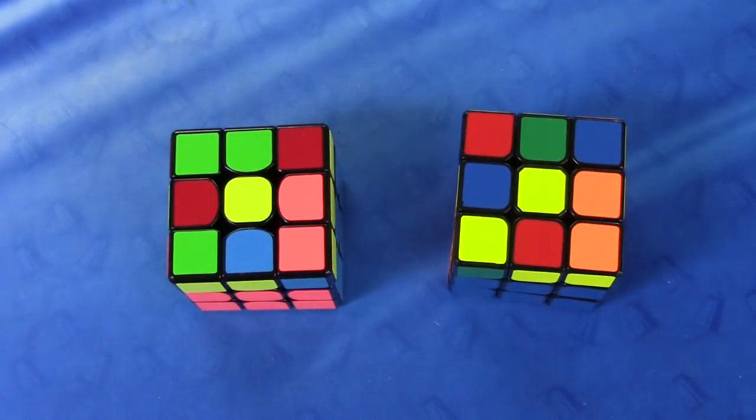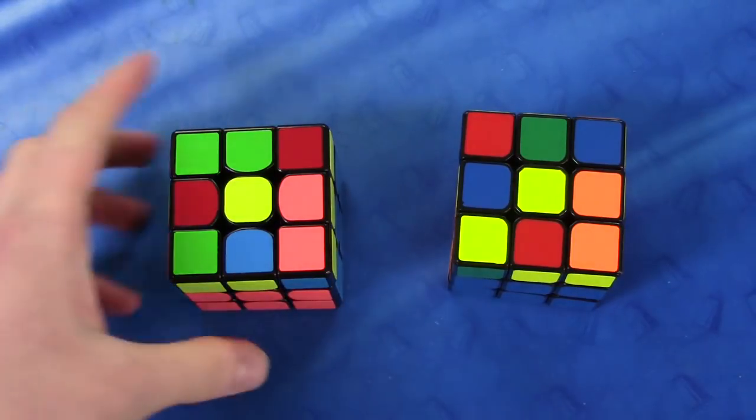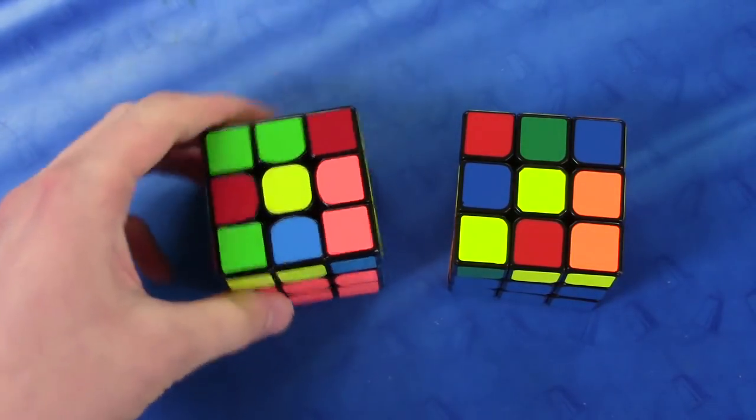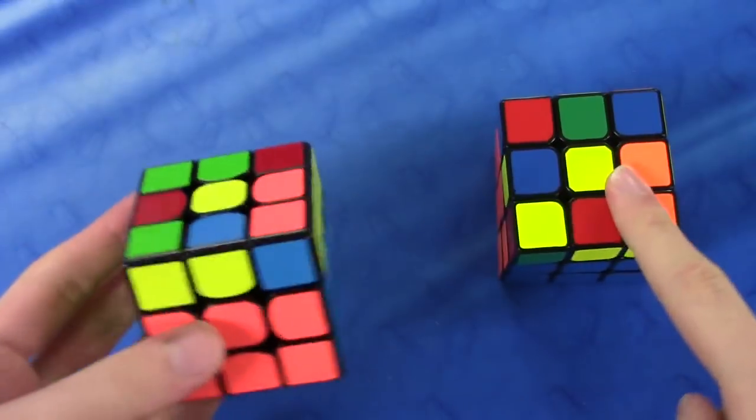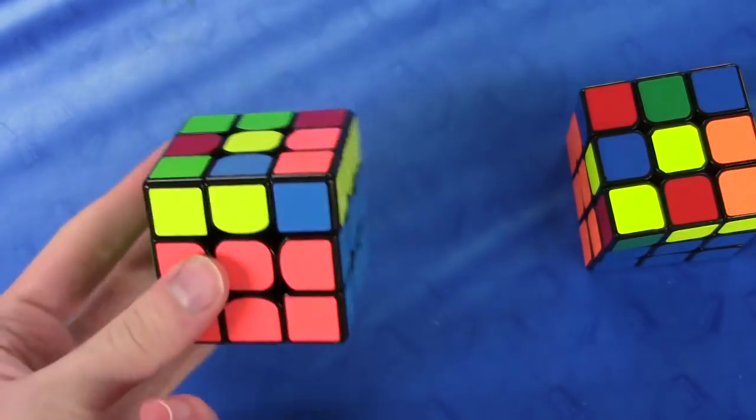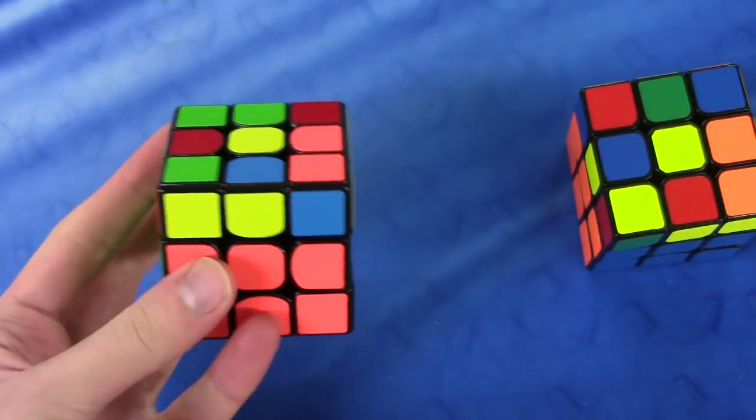So the final case, the dot OLL case, is a little less good than the other ones. Now I have two algs once again, one of them is a little longer and the other one requires double flicks, so it's really up to you depending on what you can finger trick. So the first one goes like this.